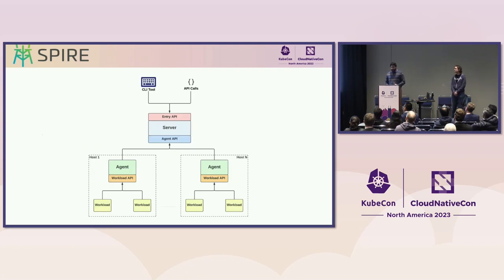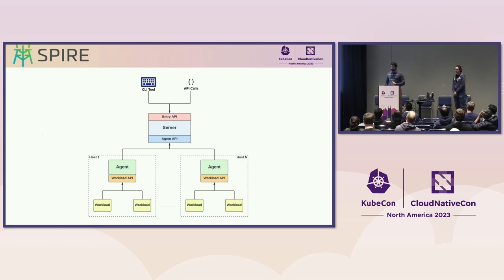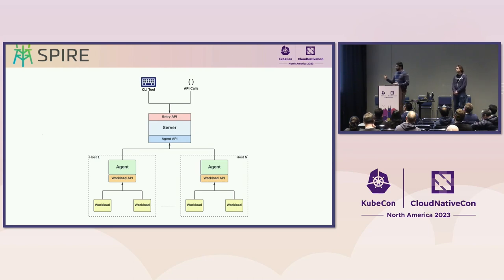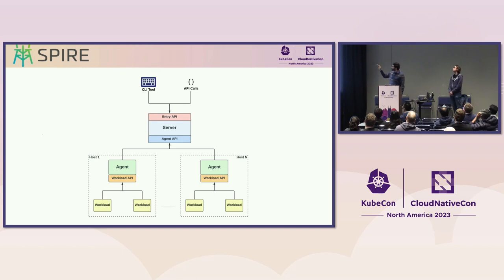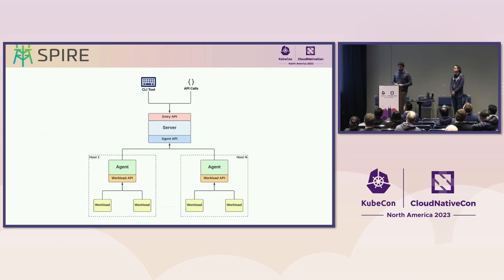Next, we'll discuss some details about the SPIRE architecture and know more about the components and APIs involved. A SPIRE deployment consists of a SPIRE server and one or more SPIRE agents. The SPIRE server is primarily responsible for managing workload registrations, and it also acts as a signing authority to distribute workload identities to SPIRE agents. The SPIRE agent runs on every node on which workloads run, and it is primarily responsible for attesting workloads and issuing identity documents to them via the workload API. Firstly, registrations are made to the SPIRE server via the entry API. Each registration entry specifies which selectors a workload should have to be able to fetch an identity — for example, a specific label on a Docker container or on a Kubernetes pod.